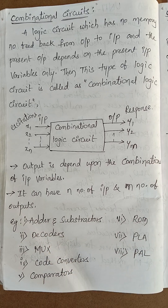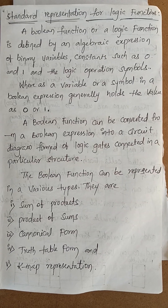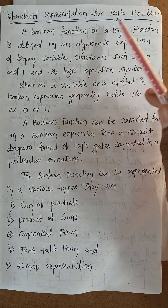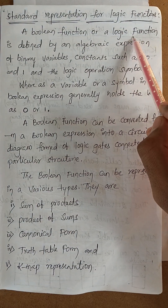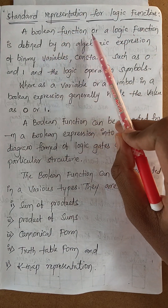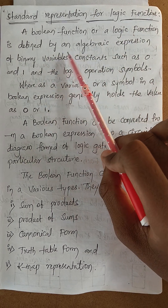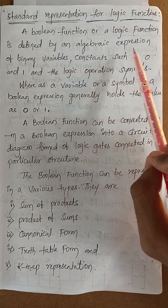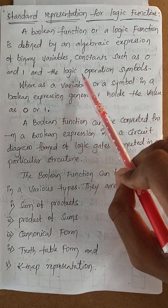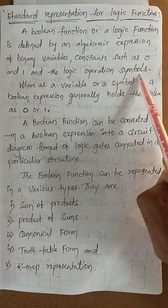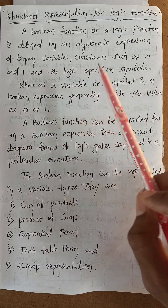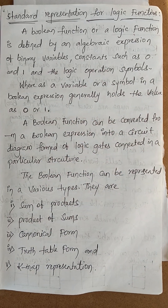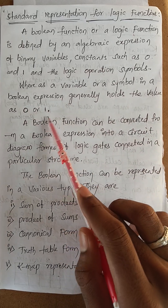Next is the standard representation for logic functions. A Boolean function or a logic function is defined by an algebraic expression of binary variables, constants such as zeros and ones, and logic operation symbols.